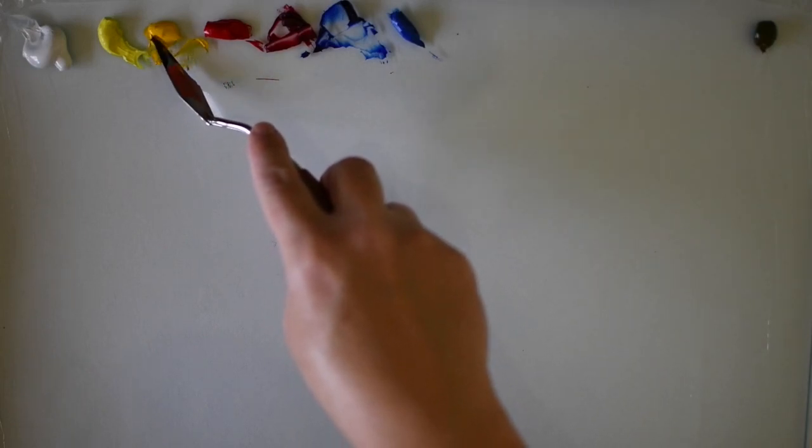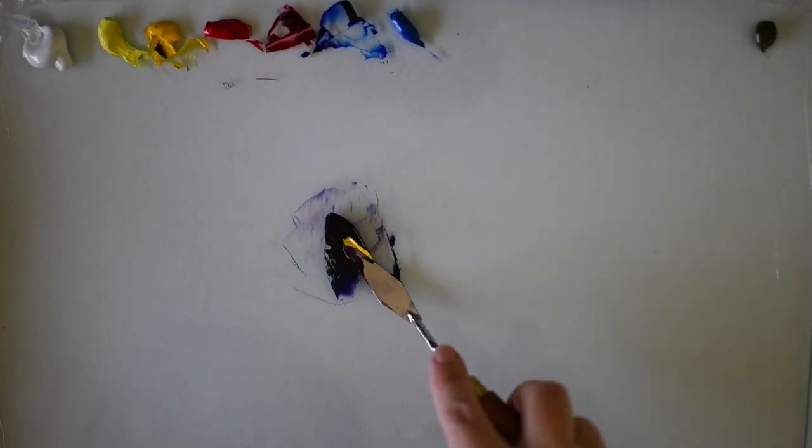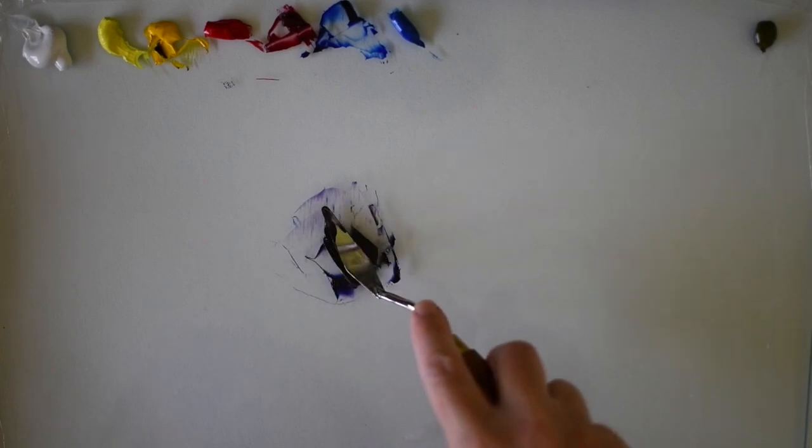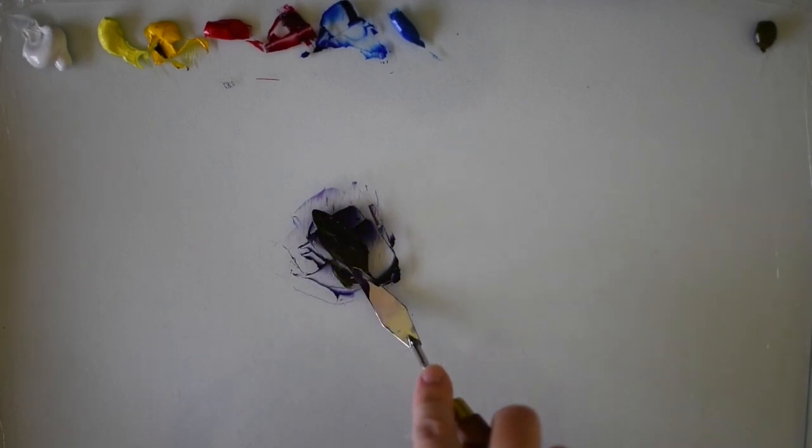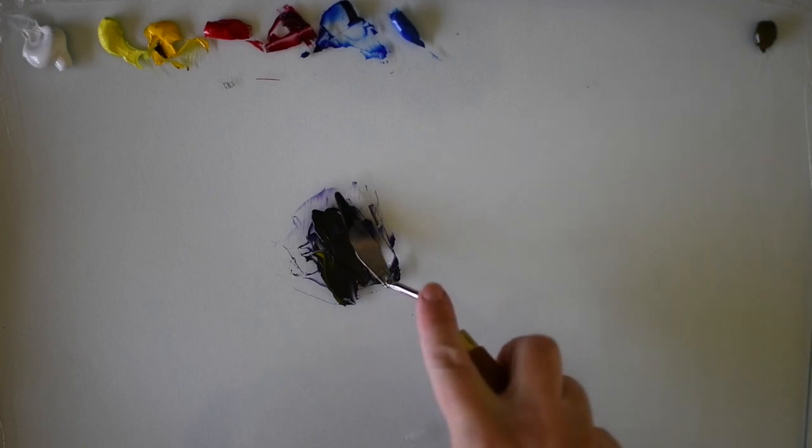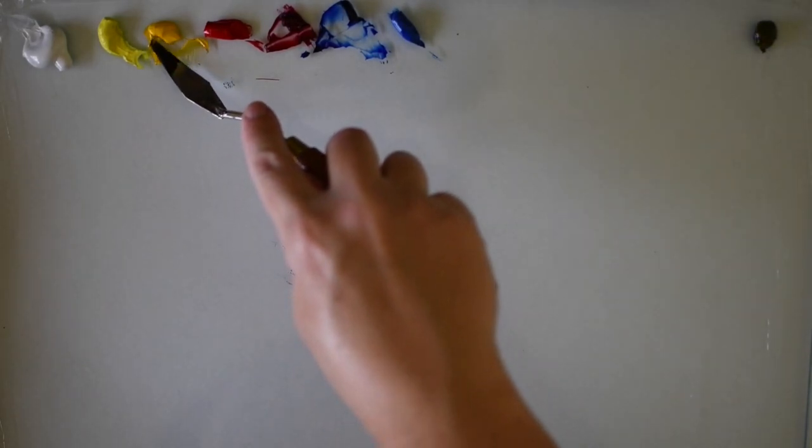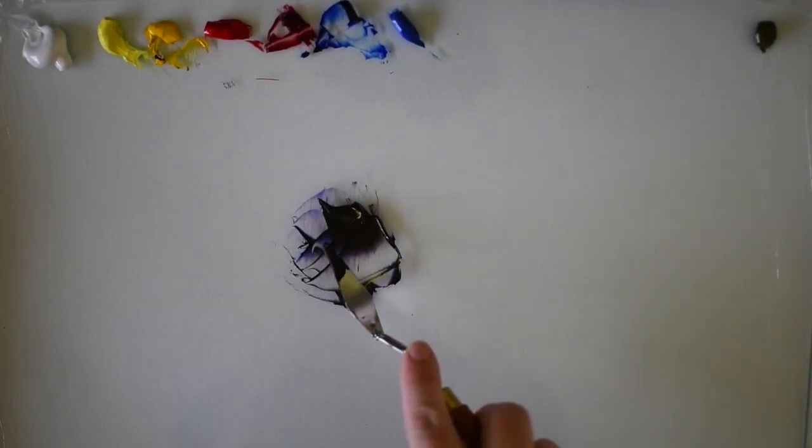Then I'm going to add some cadmium yellow. Do a little bit at a time - you don't want to add too much in one go because it will end up looking like a green. Mix that through.